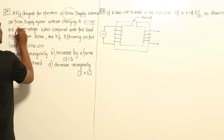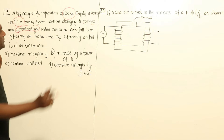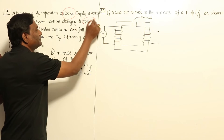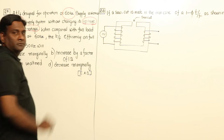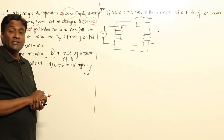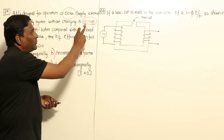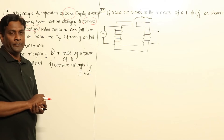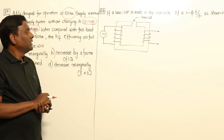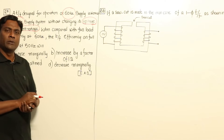Since the current ratings are the same, copper losses will be the same because current is same. And now, if you see voltage ratings are the same, it means eddy current losses are independent of frequency and will be decided by voltage only. So the moment voltage ratings are same, eddy current losses also will be same.